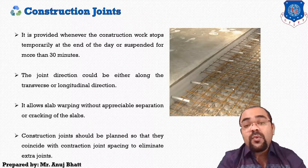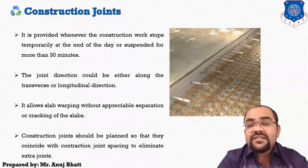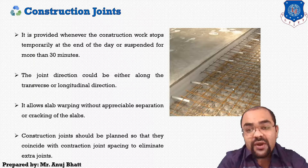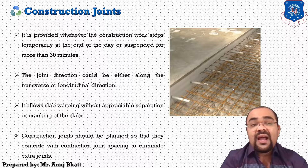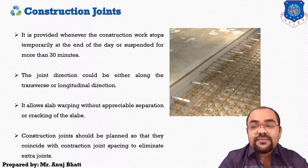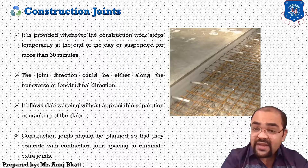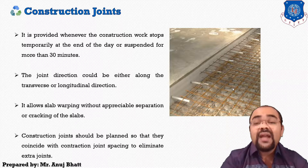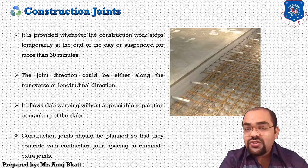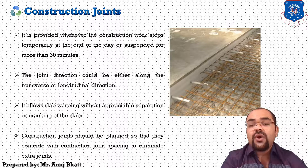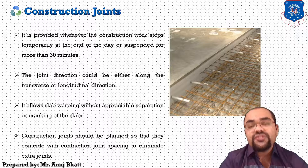Longitudinal construction joints also allow slab warping. These joints shall be provided at the location of contraction joints using tie bars. Generally, workers manually insert tie bars at the construction joints. Construction joints should be planned so that they coincide with the contraction joints, to eliminate extra joints in the pavement structure.